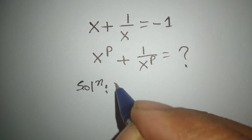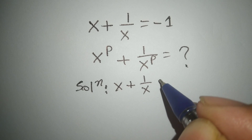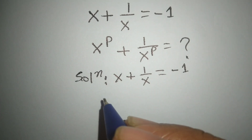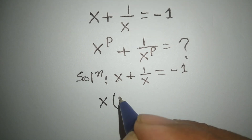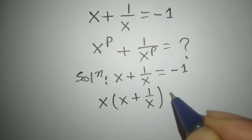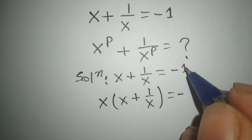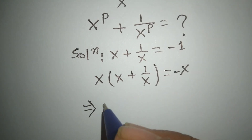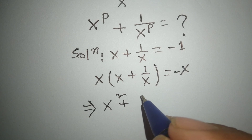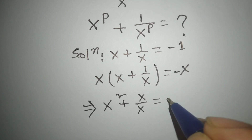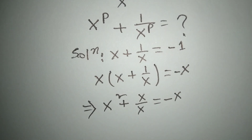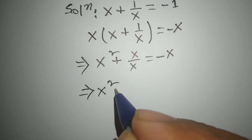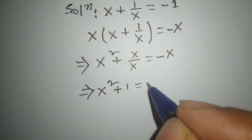Solution: x plus 1 over x is equal to negative 1. Now we will multiply both sides by x. Here x times x plus 1 over x equals minus x. Or x squared plus 1 is equal to minus x.